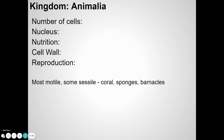We talked about the kingdoms — plant kingdom, protist kingdom, bacteria, fungi, archaea — the last kingdom we didn't talk about is animals. Animals are multicellular; they are made of many cells. The cells in animals have a nucleus, so we call that eukaryotic. Eukaryotes do have a nucleus.